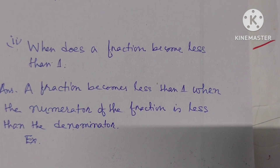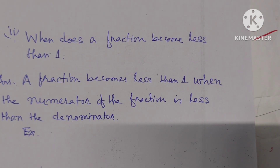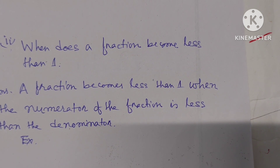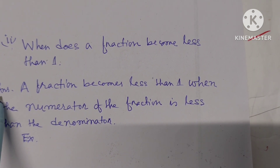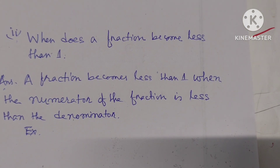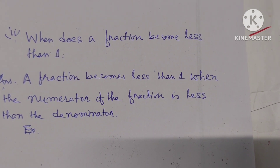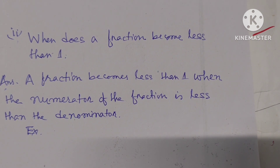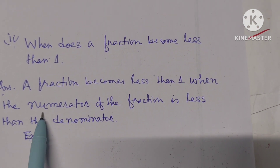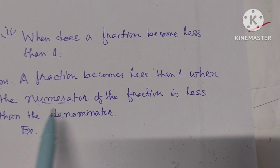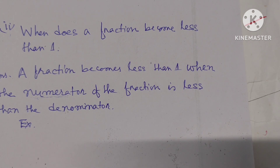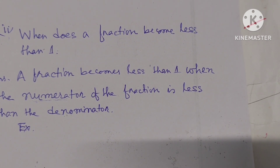When does a fraction become less than 1? A fraction becomes less than 1 when the numerator of the fraction is less than the denominator. That means, when the numerator is less than the denominator, the fraction is less than 1.